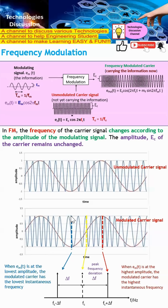Looking at this point on the diagram: when we are at the lowest amplitude of the modulating signal, this is represented by the lowest frequency in the FM signal. As it moves to the center point — which is zero — this is represented by the carrier frequency. Then as the amplitude increases to its maximum, this is represented by the maximum frequency.